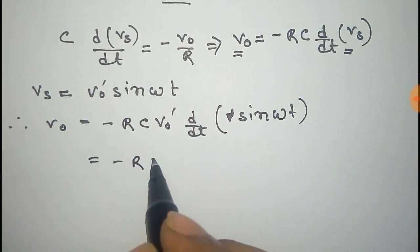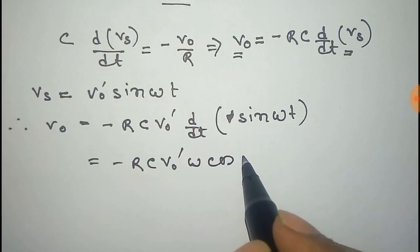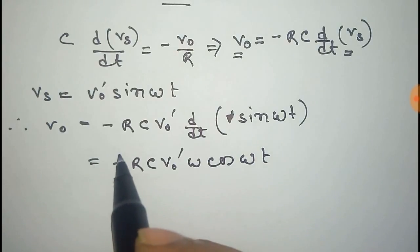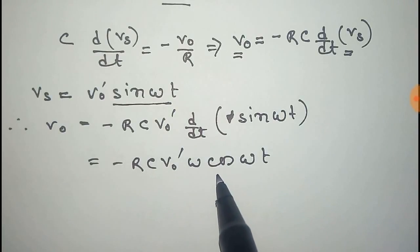So Vo = -RC V'ω cos(ωt). Thus the output is the cosine wave. For the input sine wave, we get the output as cosine wave.